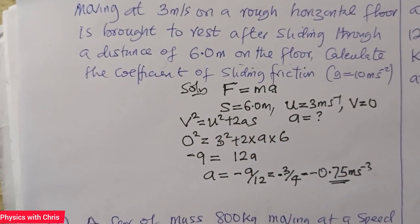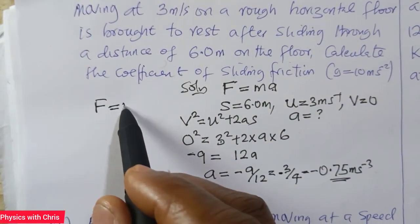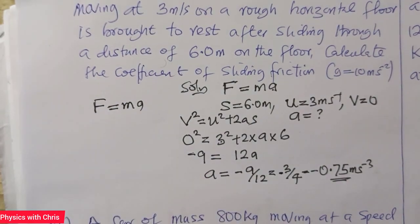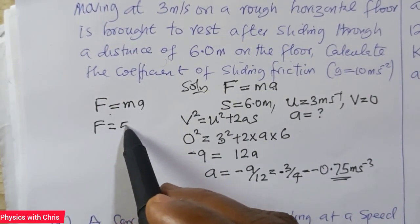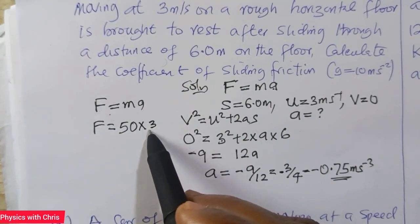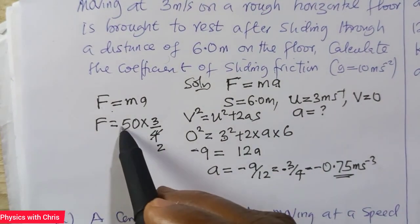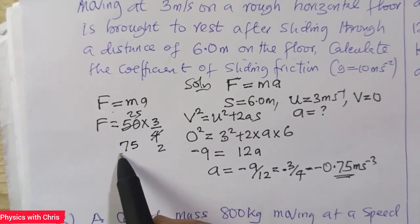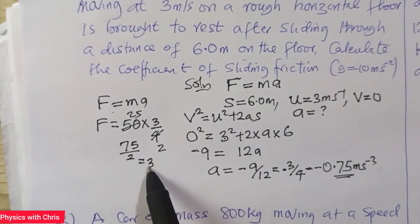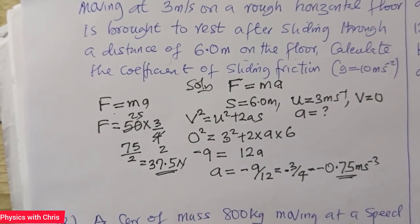Now to calculate the coefficient of sliding friction, I must find F using F = mA. My F here becomes the frictional force, because that is what produces deceleration. So F equals the mass of the body, which is 50, times the deceleration, which is 3/4. That gives me 75/2, which equals 37.5 Newtons. This 37.5 Newtons is my frictional force.